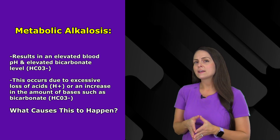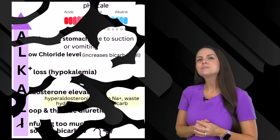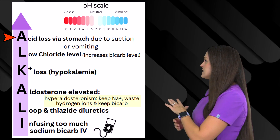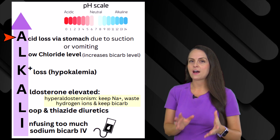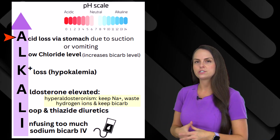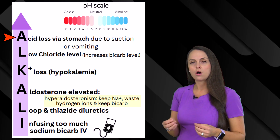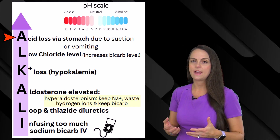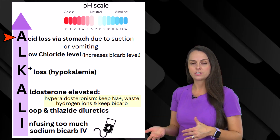What are some conditions that could cause either of these two things to happen? To help us remember those conditions, let's remember the word ALKALI — alkali is a synonym for base. First, we have A for acid loss via the stomach. Your stomach acid is really rich in hydrogen ions. So if we are over-suctioning the patient, removing too much of their GI juices, or they're vomiting, they're losing a lot of hydrogen ions, which when we drop hydrogen ion concentration, we increase that blood pH. Because blood pH is measuring the concentration of hydrogen ions in the body.